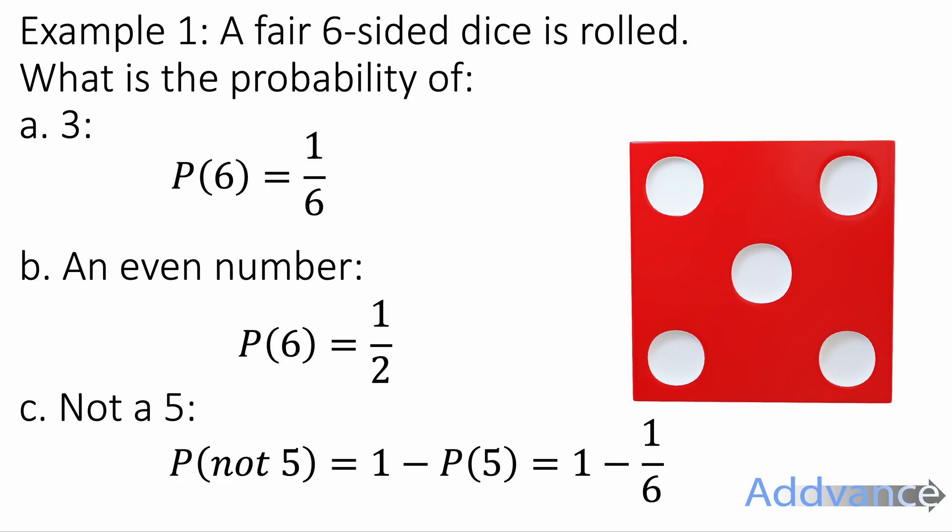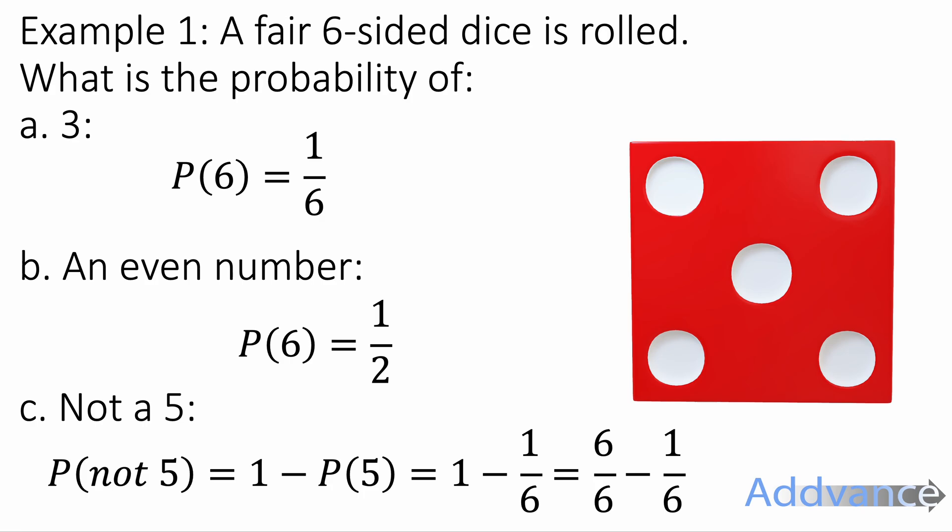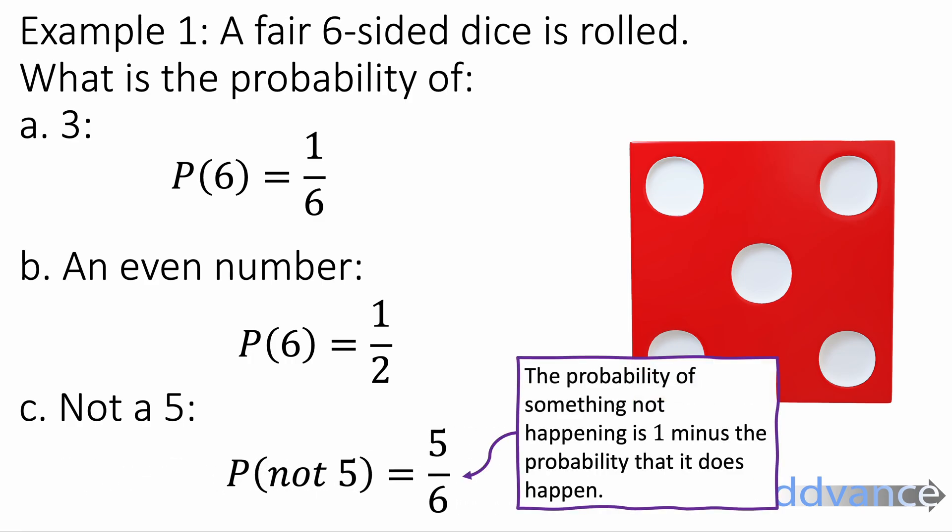We subtract the probability of getting a 5 from 1 to find the probability of it not happening. So 1 minus 1 sixth is the same as 6 sixths minus 1 sixth, because 1 is the same as 6 sixths. And that gives us 5 sixths. The probability of not getting a 5 is 5 out of 6. Just remember, the probability of something not happening is 1 minus the probability that it does happen.